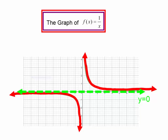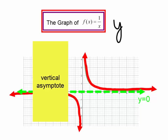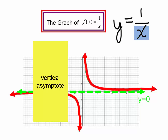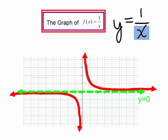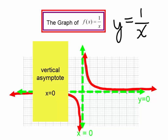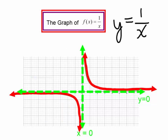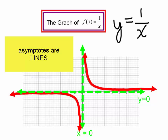We also have a vertical asymptote. Remember, we have the graph y equals 1 over x, and x is in the denominator, so x cannot equal 0. We have a vertical asymptote at x equals 0. Remember, asymptotes are lines — you have to have y equals a number, or x equals a number, or if it's a slant asymptote that's a different story, but you will have an equation of a line.